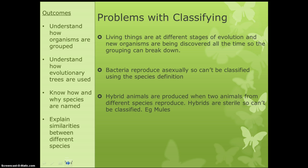Classification also falls down with hybrid animals — where two animals from different species reproduce and create another animal. For instance, horses and donkeys can breed to produce mules. Mules are sterile and cannot have offspring, which means they don't have a species and don't fit anywhere in our classification system. There are loads of examples: lions and tigers can produce ligers or tigons depending on which is the male and which is the female.